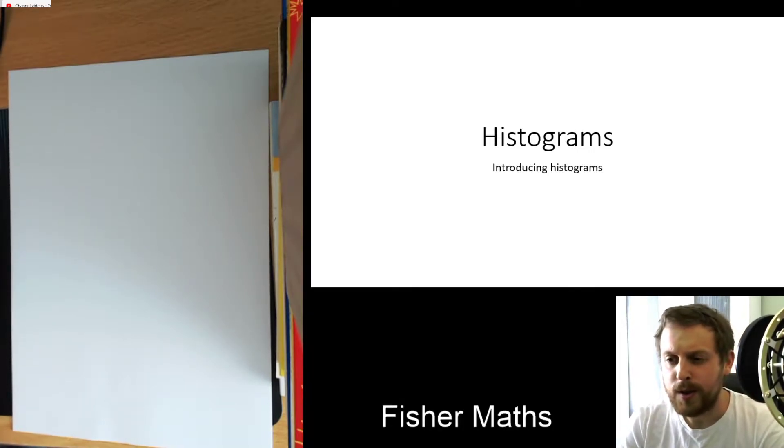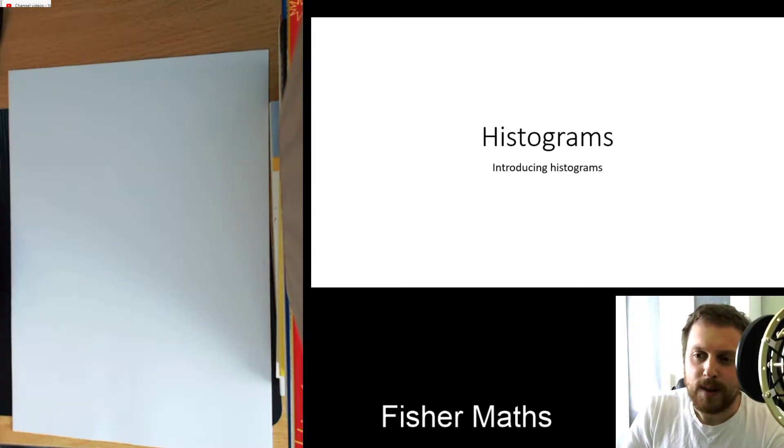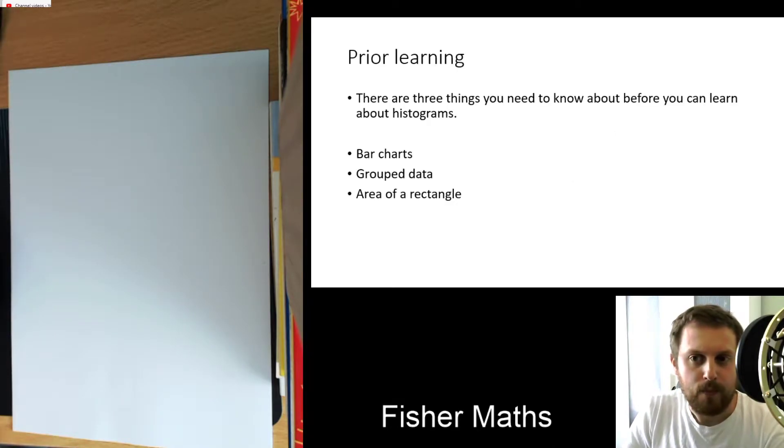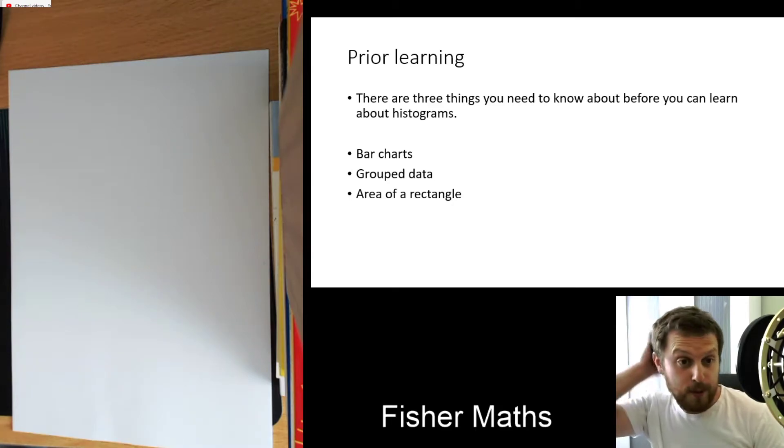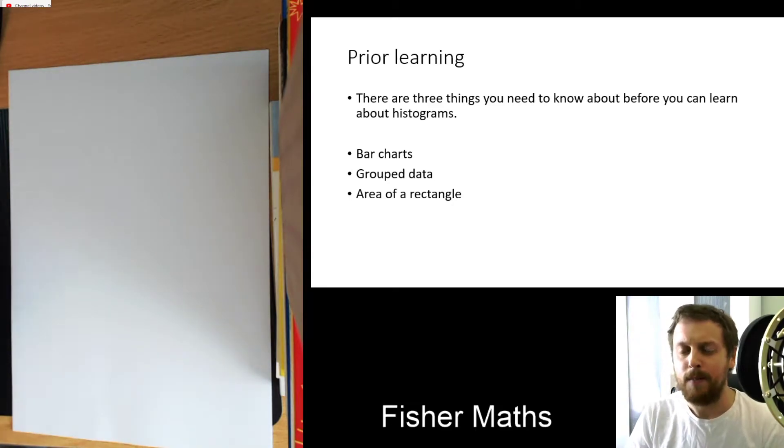If you want to watch this just so that you can double check that you're confident, keep watching. So as I said, there are three things that you need to know about: bar charts, grouped data, and the area of a rectangle. So I'm just going to talk about each one of these, one after each other.